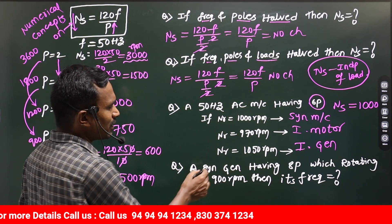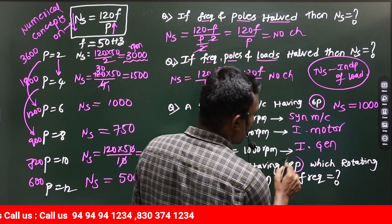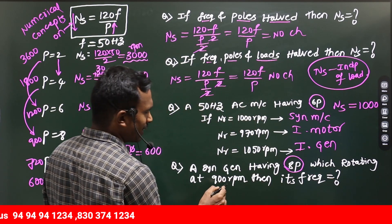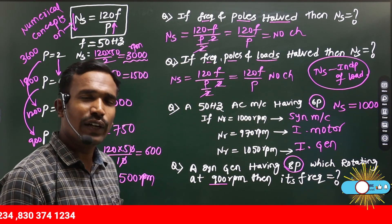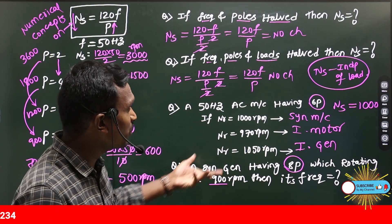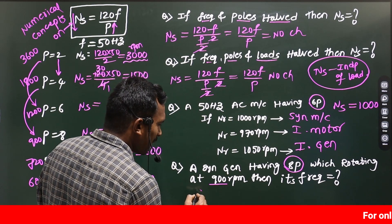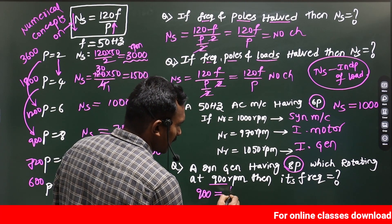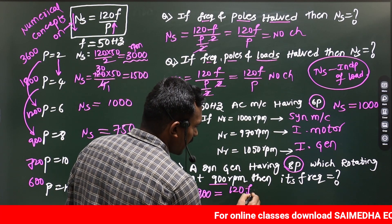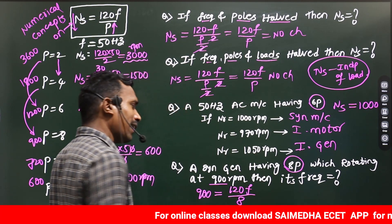For example, a synchronous generator having 8 poles, which rotating at 900 rpm, then its frequency. They asked in reverse. So, tell me, what will be the answer? The speed they given 900 rpm. NS equals 120F by P. I know the P value.